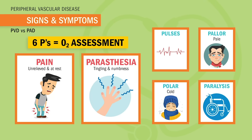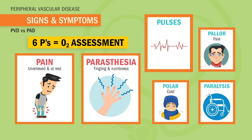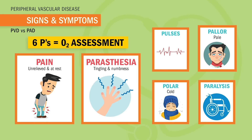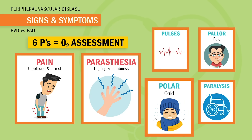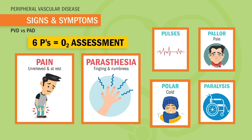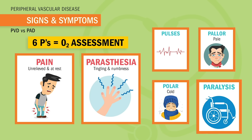The other four Ps we sort of expect to be there, so we don't focus on them as much for test priority. Pulses are going to be diminished or weak, especially in PAD. Pallor is just the paleness from low blood flow — think 'polar,' because the leg gets cold like a polar bear since it lacks warm blood flow. And lastly, paralysis — the inability to move the limb; just think the limb is passed out from lack of oxygen.